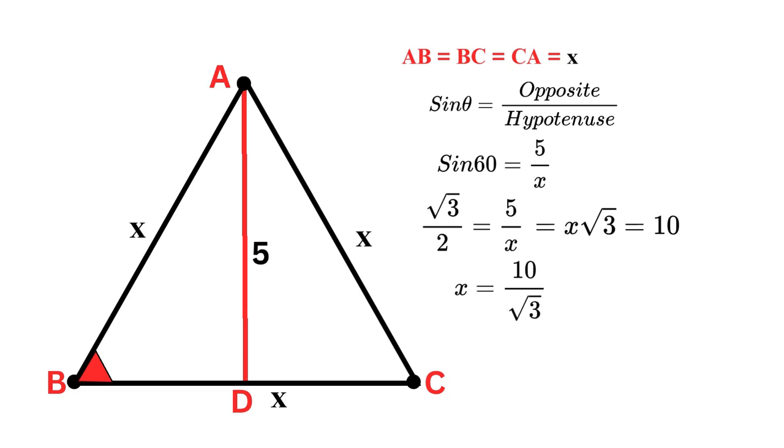To rationalize this, we multiply square root of 3 to both the numerator and denominator. So it becomes x equals 10 times square root of 3 over 3, and we get the value of x.